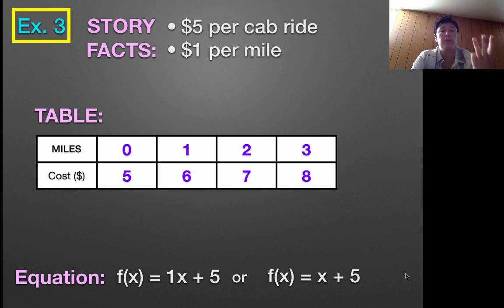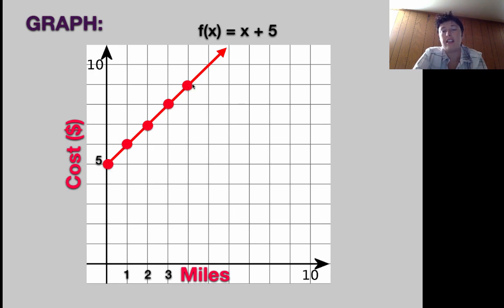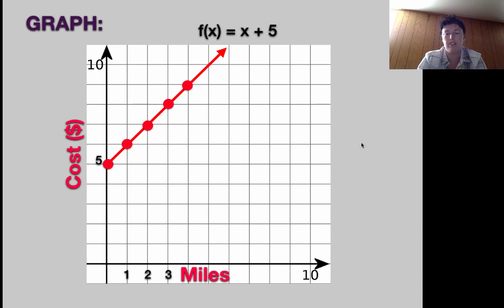Story, table, equation — we're just left with the graph, which you should have already done. The graph has miles on the x-axis, cost in dollars on the y-axis, scale numbers, and it starts at 5 and keeps growing: 6, 7, 8, 9. I labeled the function at the top and connected it with an arrow. Takeaway from this video: a function can be represented with a story, a table, a function equation, and a graph. If you can do all four, you're at that advanced level four — exceeding expectations and you really have functions down.